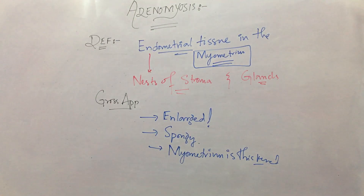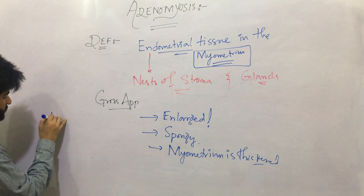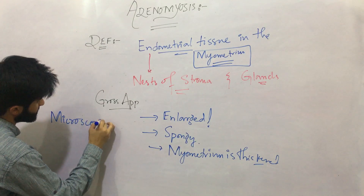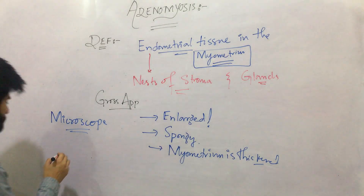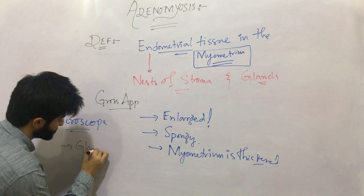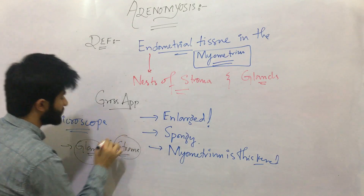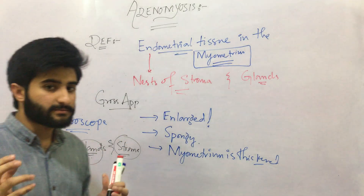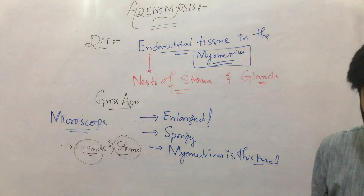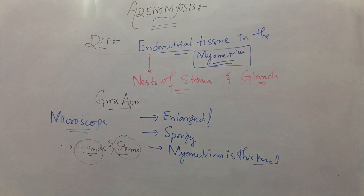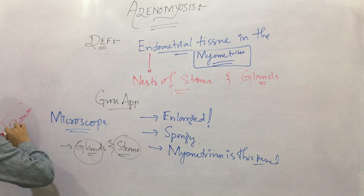What will be the microscopic appearance? Under the microscope, the myometrium will have glands and stroma of the endometrium present within it. However, we will not label it as Adenomyosis unless these glands and stroma are visible below 2 mm of the stratum basale.